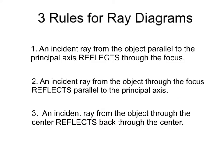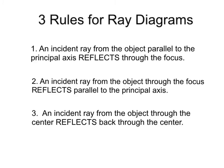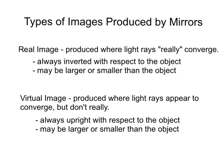In class you constructed ray diagrams to determine locations of images formed by both concave and convex mirrors. Here are the three rules for ray diagrams — please pause the video to write down these rules in your notebook. Rule one: an incident ray from the object parallel to the principal axis reflects through the focus. Rule two: an incident ray from the object through the focus reflects parallel to the principal axis. Rule three: an incident ray from the object through the center reflects back through the center.